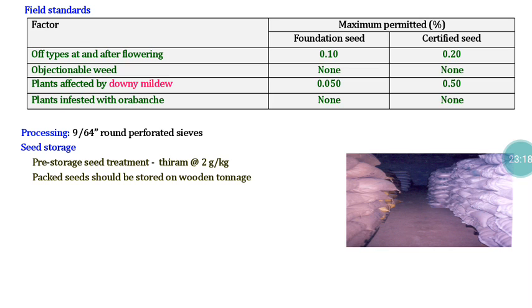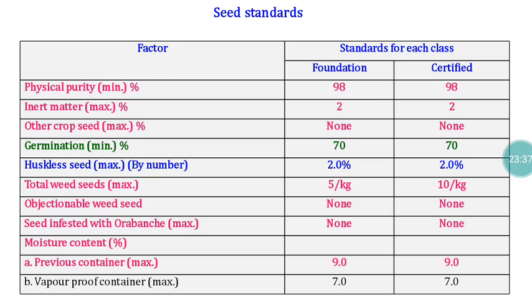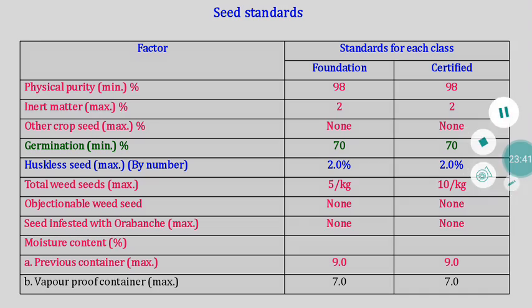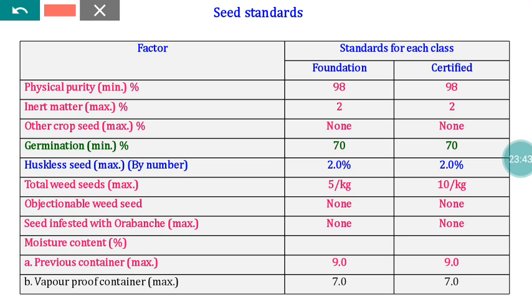After harvesting and shelling, seeds are processed with 9/64-inch round perforated sieves, then treated with carbendazim or thiram before storage. Field standards: for foundation stage, maximum off-type permissible after flowering is 0.1%, and for certified stage, 0.2%. Seed standards: minimum germination percentage for sunflower, like other oilseed crops, is 70%.